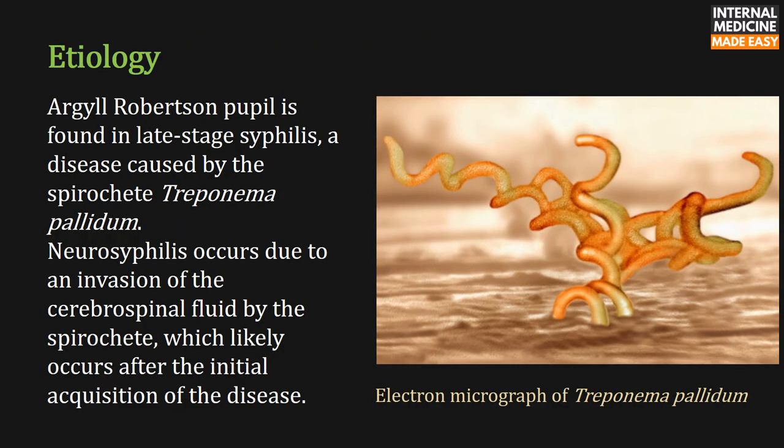Argyle Robertson pupil is found in late-stage syphilis, a disease caused by the spirochete Treponema pallidum. Neurosyphilis occurs due to an invasion of the cerebrospinal fluid by the spirochete, which likely occurs after the initial acquisition of the disease.